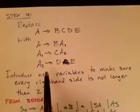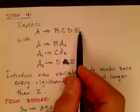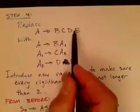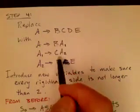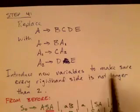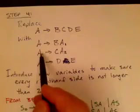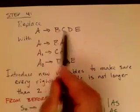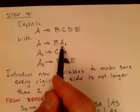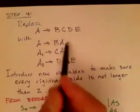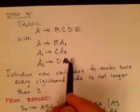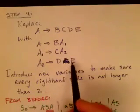In the fourth step, we need to reduce right-hand sides to no more than two symbols. If we have a long right-hand side, we break it apart by introducing new variables. For example, A goes to BCDE becomes A goes to B·A1, where A1 goes to C·A2, and A2 goes to DE — so every right-hand side has at most two symbols.